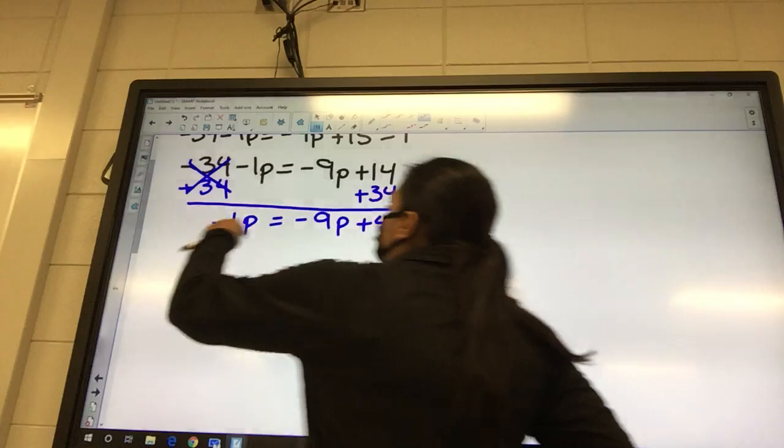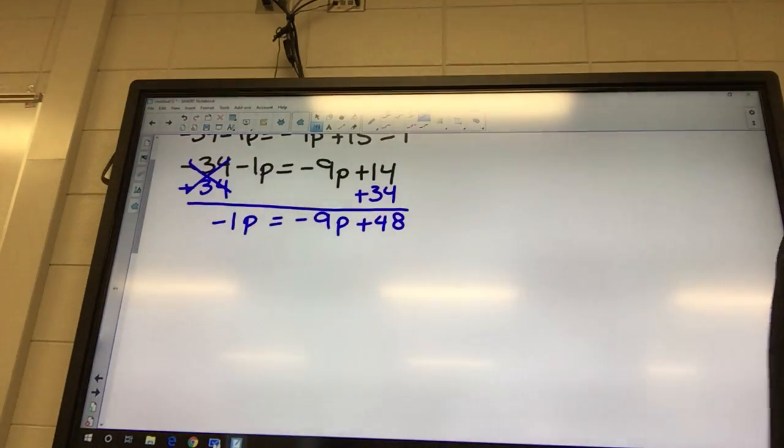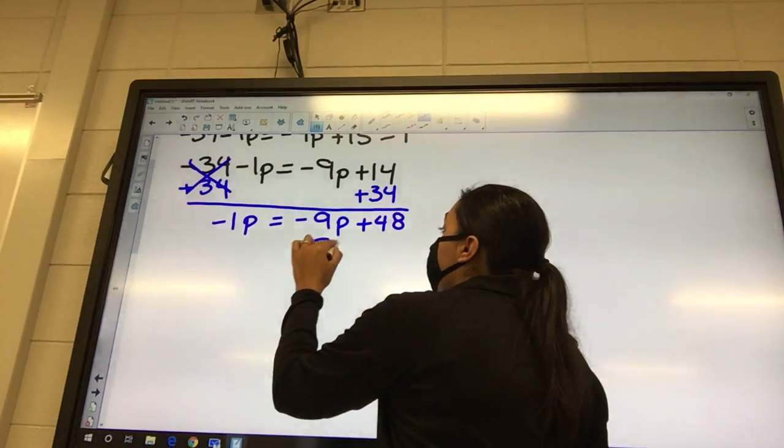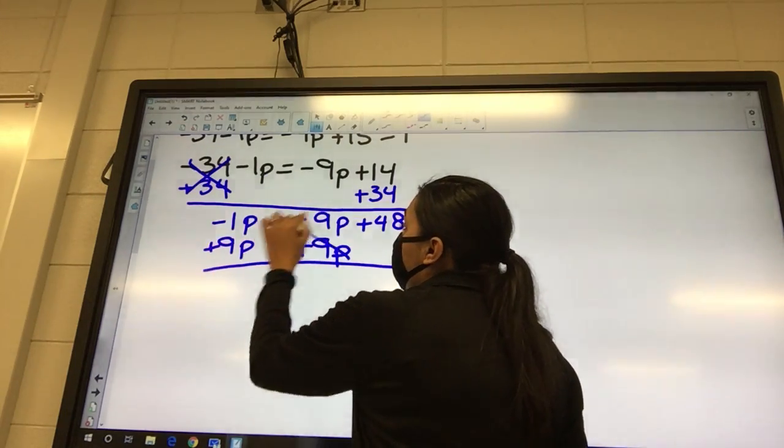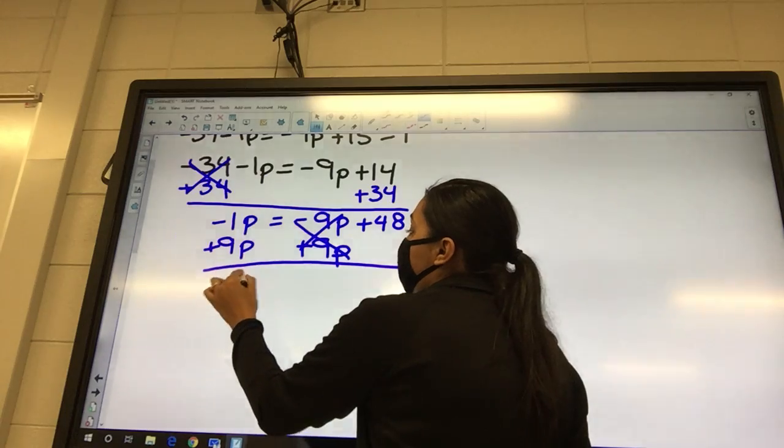Okay, what do we need to move? The nine. So I'm gonna say plus nine, plus nine. So over here I'm gonna have eight p equals 48.